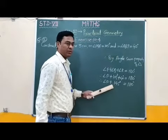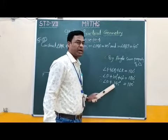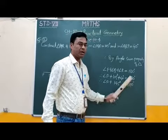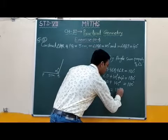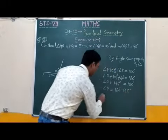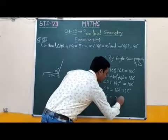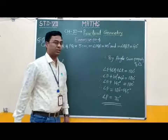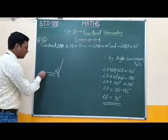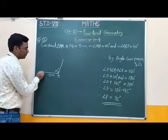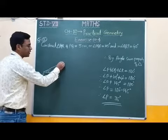When we shift 145 from the left-hand side to the right-hand side, it will subtract. Therefore, angle P is equal to 180 minus 145 degrees. Therefore, angle P is equal to 35 degrees. So if we draw a 35 degree angle at P, we will get point R.